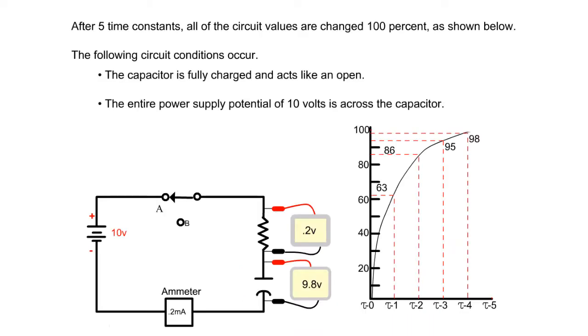After 5 time constants, all of the circuit values are changed 100 percent, as shown below. The following circuit conditions occur.